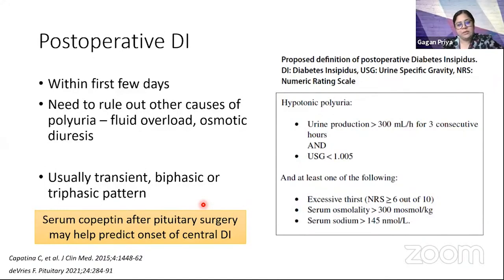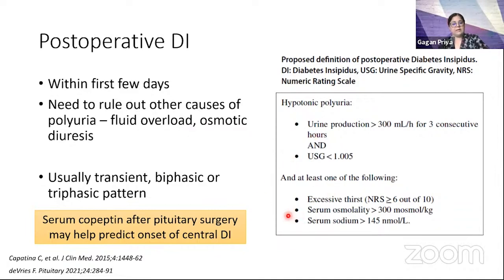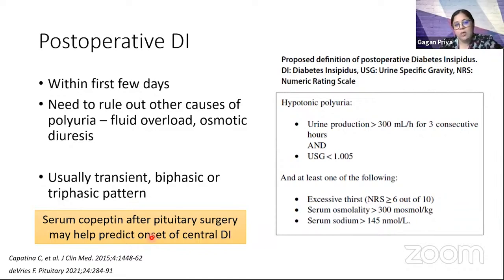Post-operative DI can occur within the first few days of surgery. We need to rule out fluid overload, osmotic diuresis from hyperglycemia, steroids, or mannitol. Urine production rate of more than 300 ml per hour for two to three consecutive hours with low urine specific gravity is a clinching point for hypotonic polyuria in the post-op period, associated with elevated serum osmolality, serum sodium, and excessive thirst. Some studies suggest that low serum copeptin measured within the first day of surgery identifies patients at higher risk of post-operative DI, warranting more vigilant monitoring.